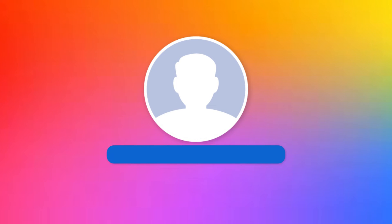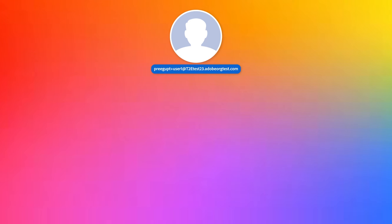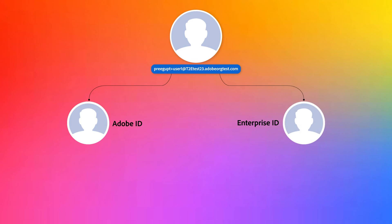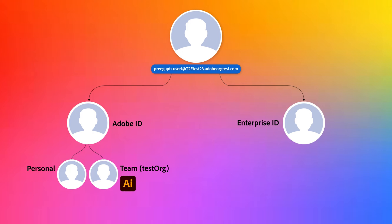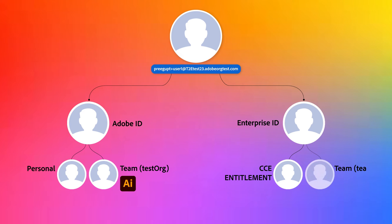Let's now review the user login experience. For illustrative purposes, consider a more complicated user login example. The user has both an Adobe ID and an Enterprise ID under the same email address. The user has an Adobe ID or personal entitlement, and has also been invited to a team which gave them a team entitlement. Additionally, the user has an Enterprise ID which has a CCE entitlement, and has also been invited to a team giving them another team entitlement. So the user has two login accounts, and each login account has two different entitlement profiles.